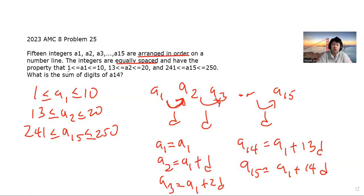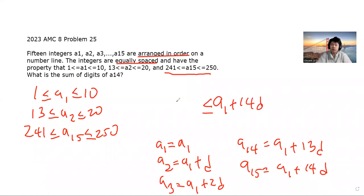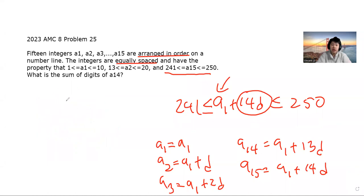Now we can use these bounds to find some of the values. A1 plus 14D is A15, and we're given that it's bounded by 241 and 250. So let's try to solve for some of the variables. We're given that 241 ≤ A1 + 14D ≤ 250. We're also given some bounds on what A1 is: 1 < A1 ≤ 10. So we can isolate for 14D. Best case scenario, when it's smallest, A1 is going to be 10, and A15 is going to be 241. So best case scenario, 14D is going to be 231, smallest case. 231 ≤ 14D.